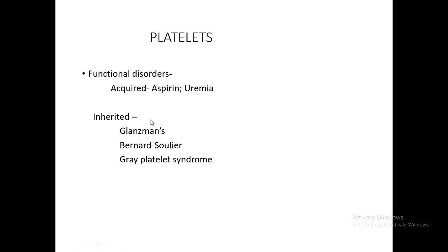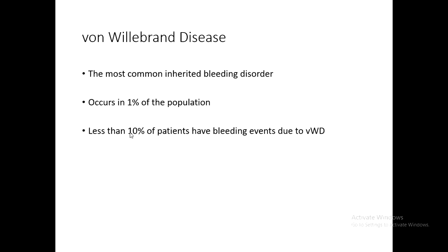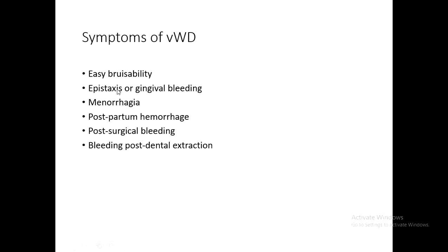Regarding platelet functional disorders: Glanzmann's thrombasthenia and Bernard-Soulier syndrome are conditions in which platelet number is normal but platelet function is impaired — patients cannot produce an effective platelet clot despite normal platelet counts. Von Willebrand disease involves a deficiency of von Willebrand factor as well as decreased platelet function, so there is coagulopathy as well as platelet dysfunction. Patients present with easy bruising, bleeding from the nose or gums, and in older adolescent girls, menorrhagia.